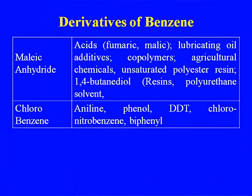Linear alkyl benzene goes for manufacture of biodegradable detergent. Maleic anhydride, another benzene derivative, finds wide application as lubricating additives, copolymers, agricultural chemicals, unsaturated polyester resin, and 1,4-butanediol. Chlorobenzene was formerly a route for aniline via nitrobenzene. Chlorination of benzene gives chlorobenzene, from which aniline, phenol, DDT, chloronitrobenzene, and diphenyl are produced.